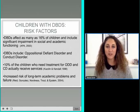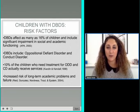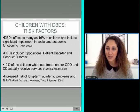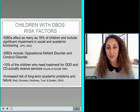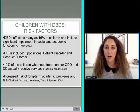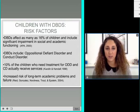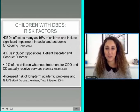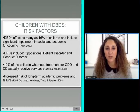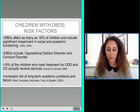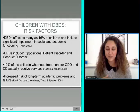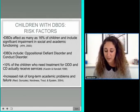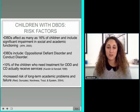PCIT improves the parent-child attachment relationship. While it was initially developed for children with disruptive behavior disorders, it has been adapted for several populations including kids with internalizing disorders. Disruptive behavior disorders affect as many as 16% of children and include significant impairment in social and academic functioning. They often include oppositional defiant disorder and conduct disorder. Only 10% of children who need treatment for ODD and CD actually receive services, leaving many without support. When left untreated, there's an increased risk of school dropout, juvenile justice involvement, drug use, depression, and sometimes violent behavior.